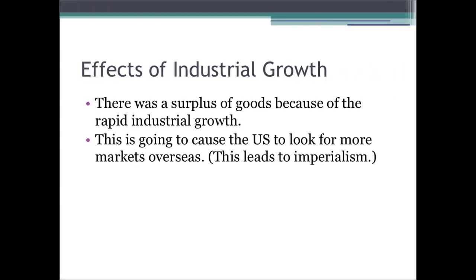As a result of the industrial growth, there's a surplus of goods, meaning there are a lot of goods out there — more goods than can be bought. This is going to cause the U.S. to look for more markets overseas so that we can trade with other countries to use up some of that surplus. This is going to lead to imperialism, which we will discuss in Standard 5.